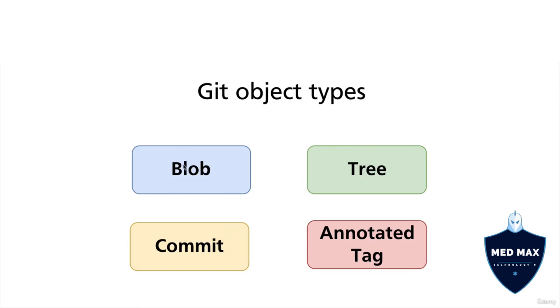Blobs represent files, trees represent folders or directories, and commits represent actual pointers to specific trees.